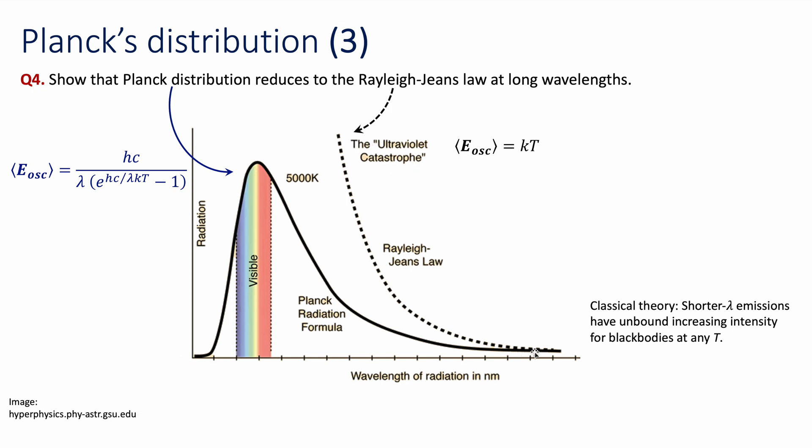Planck's radiation, on the other hand, with the introduction of quantization, was able to reproduce the entire spectrum over all wavelengths. But with that, it's natural to think that at long wavelengths, Planck's distribution will be reduced to Rayleigh-Jeans law. And that's what we're going to be doing today, how that is obtained.